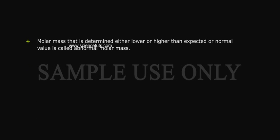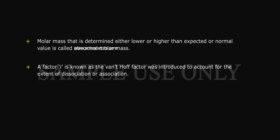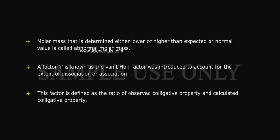Molar mass that is determined either lower or higher than expected normal value is called abnormal molar mass. A factor I is known as the Van't Hoff Factor was introduced to account for the extent of dissociation or association. This factor is defined as the ratio of observed colligative property and calculated colligative property.